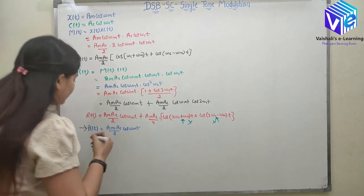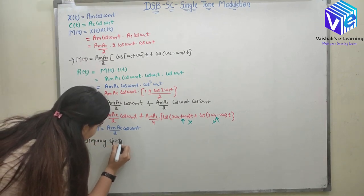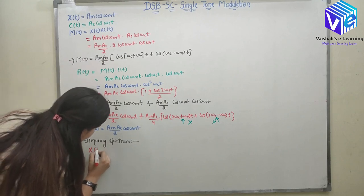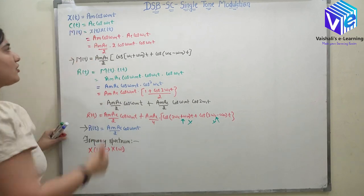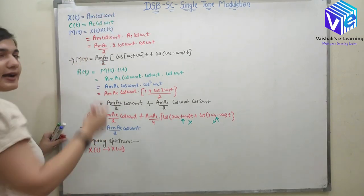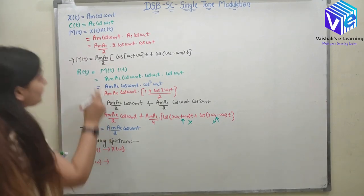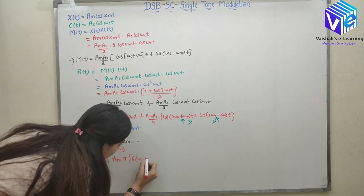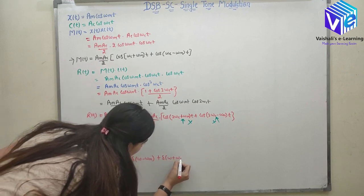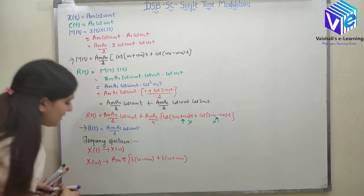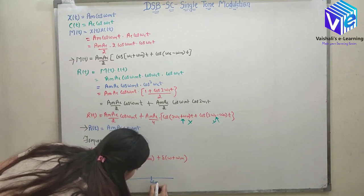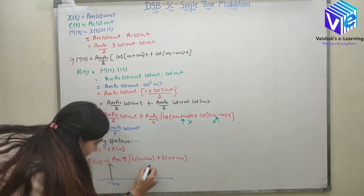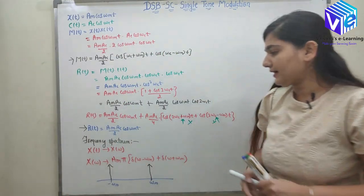Now talking about frequency spectrum analysis. The frequency spectrum of x(t) is X(ω). Since x(t) = Am·cos(ωm·t), the Fourier transform gives X(ω) = Am·π·[δ(ω−ωm) + δ(ω+ωm)]. Graphically, at ±ωm I have impulse functions of length Am·π. This represents the frequency spectrum of X(ω).